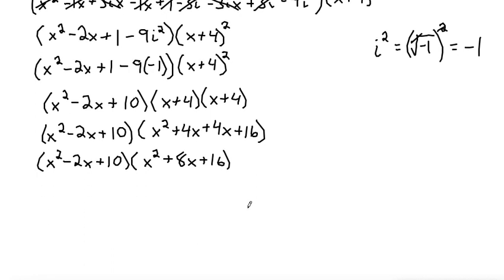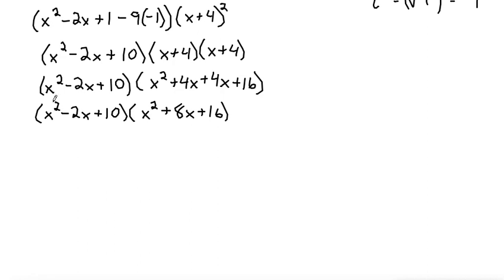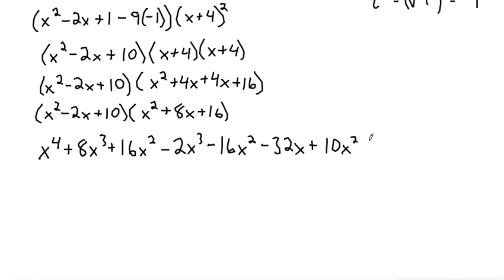So we're almost there. Let's now distribute out again. x squared times x squared is x to the fourth. x squared times 8x is 8x cubed. x squared times 16 is 16x squared. Negative 2x times x squared is negative 2x cubed. Negative 2x times 8x is negative 16x squared. Negative 2x times 16 is negative 32x. And 10 times x squared is 10x squared. 10 times 8x is 80x. And 10 times 16 is 160. So notice I'm doing this very methodically so I make sure I don't miss any terms.